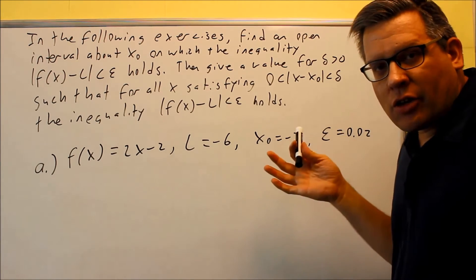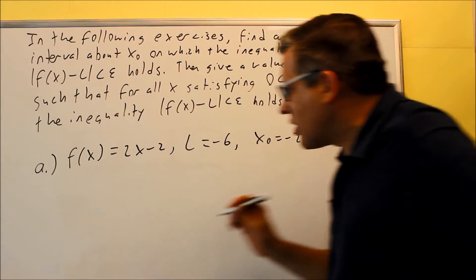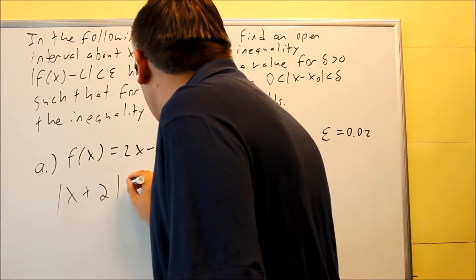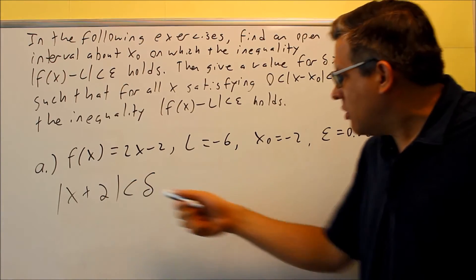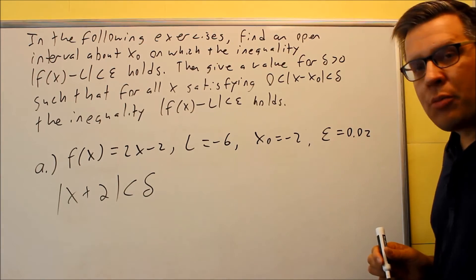And absolute values automatically are going to give you something greater than 0, so we don't need to actually write the 0 in this case. We can write our problem as absolute value of x plus 2 is less than delta. So again, it's plus 2 because you're putting negative 2 into here and you have a double negative there, that's why it's going to be plus.